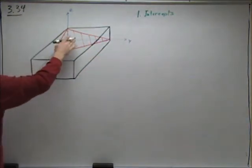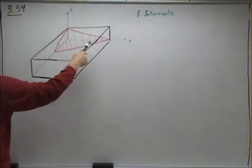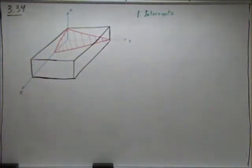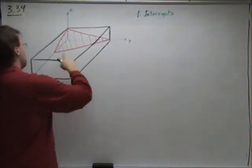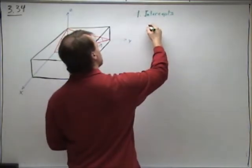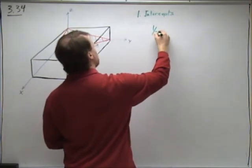Where does this plane intercept each of the three axes? For the x-axis, it's about halfway down, so we have one-half.